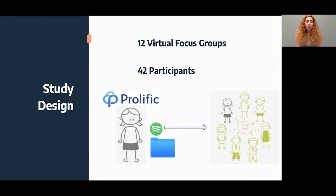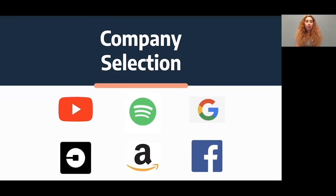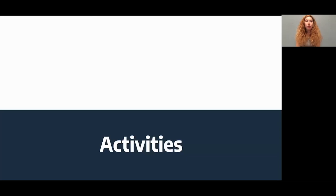We answered these questions through a user study. We recruited prospective participants on Prolific and had them request their own data from one of six popular websites. When they received their data, we invited them to a 75-minute online focus group with three to four other participants. Overall, we conducted 12 focus groups with a total of 42 users. We selected six companies that had fast and easy data request processes, and each participant downloaded their own data from one of these companies. Each session focused on one company.